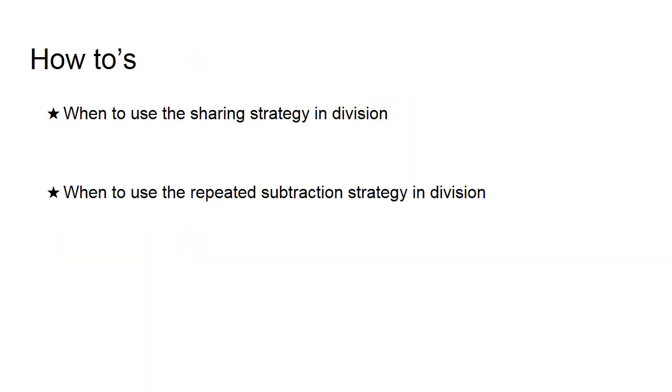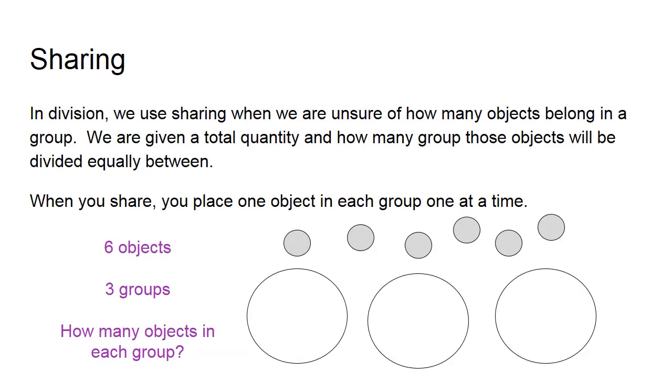Our how-tos today are going to be how to actually use these strategies in given situations. Let's begin with sharing. In division, we use sharing when we are unsure of how many objects belong in a group, meaning I have a certain number of groups, I have the objects, but I just don't know how many to give to each group so that all the groups have an equal amount.